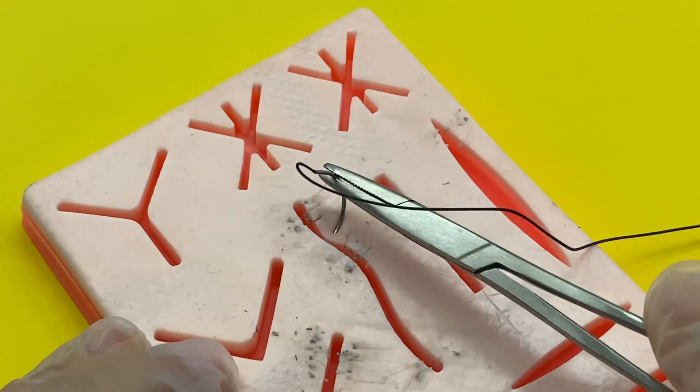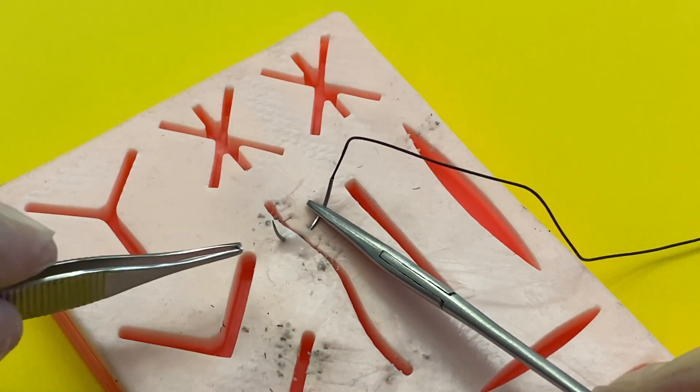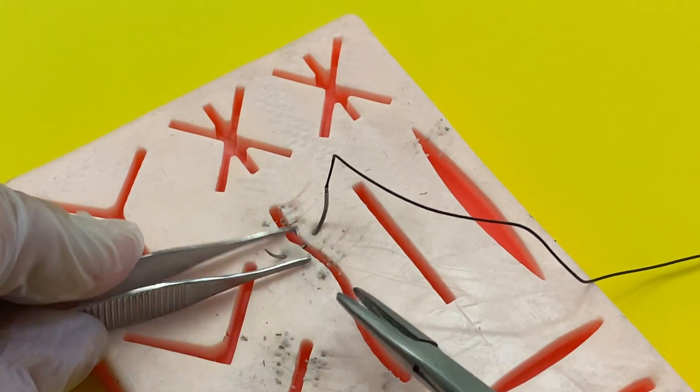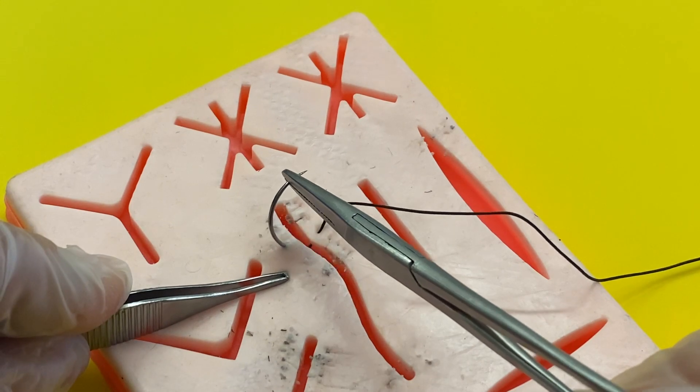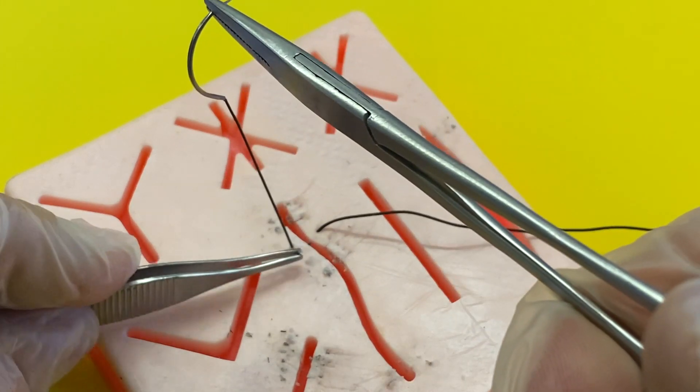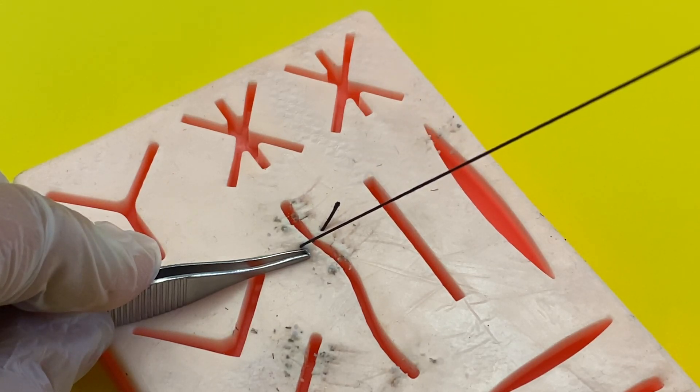Okay, I took the thread out so I can show you one more time. Needle driver through. Use the tweezers to hold the skin down while you pull the needle through. Remember, you're going to grab the needle driver at the tip and pull the thread all the way to the end, leaving a little bit over.